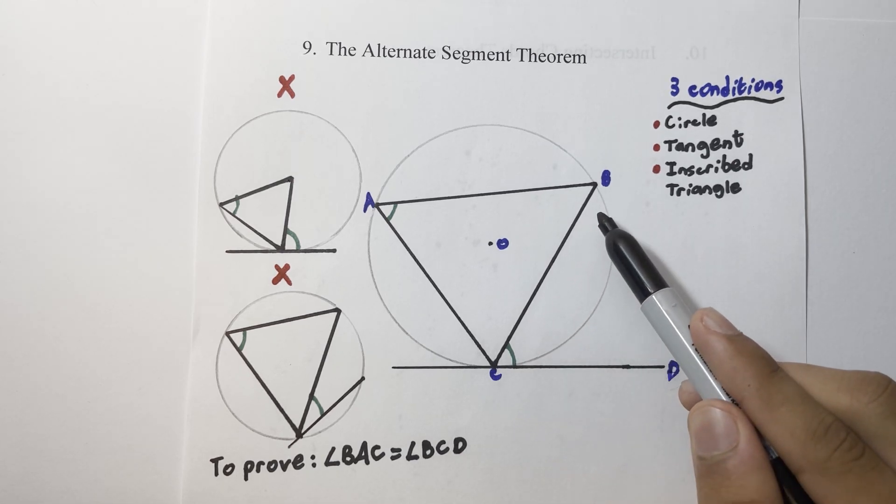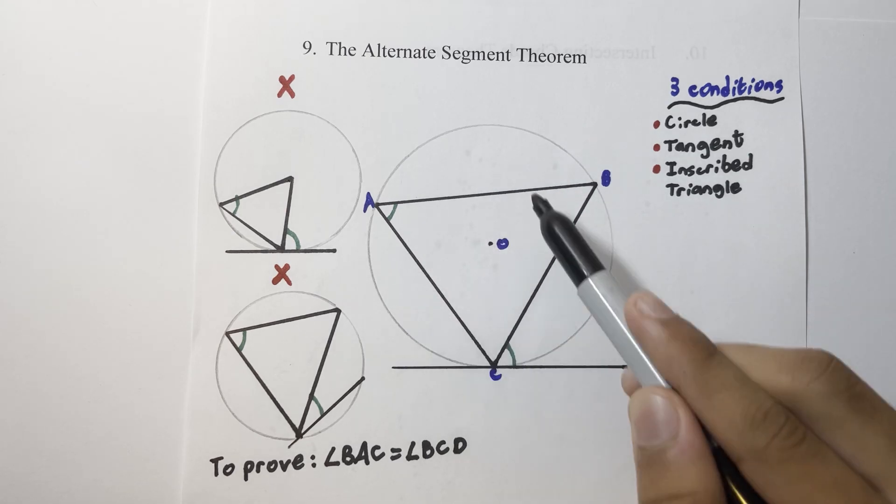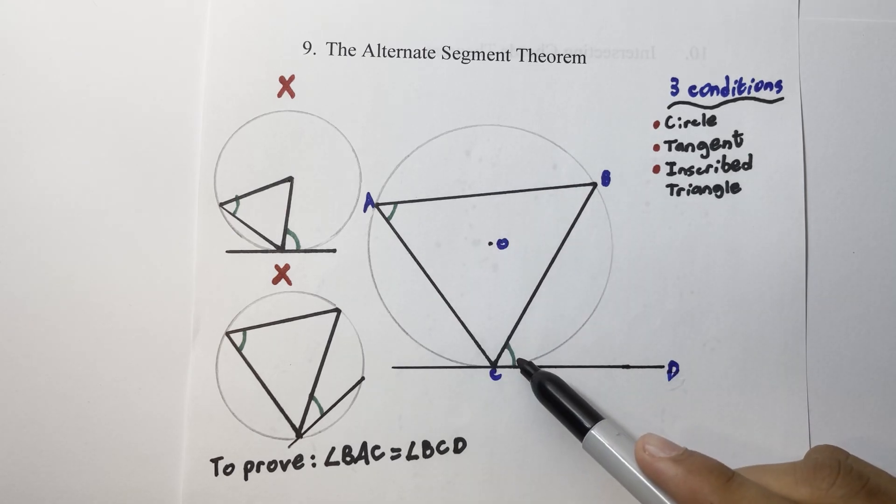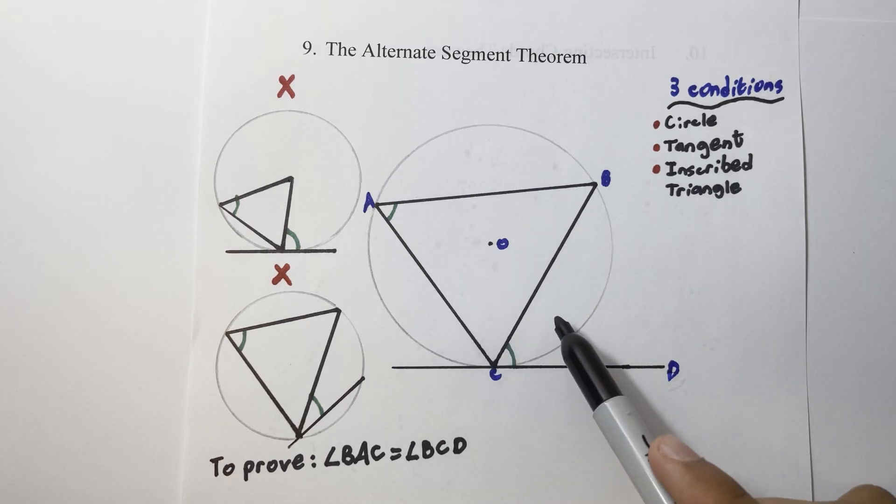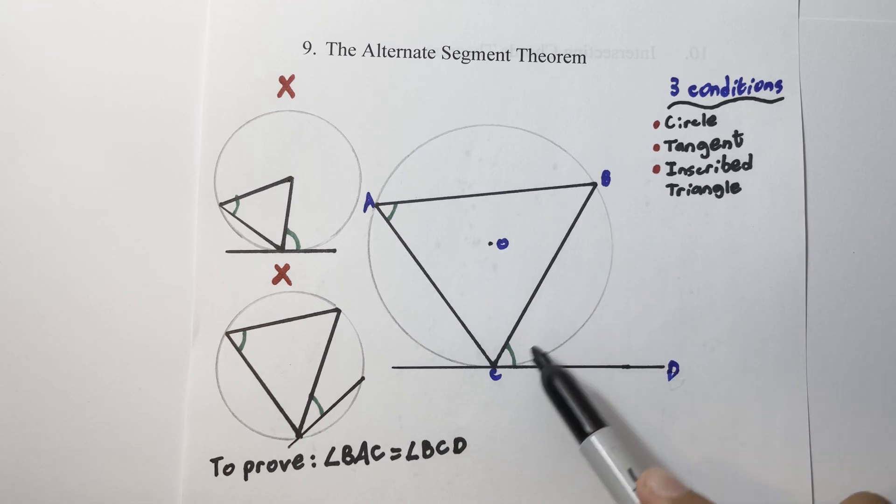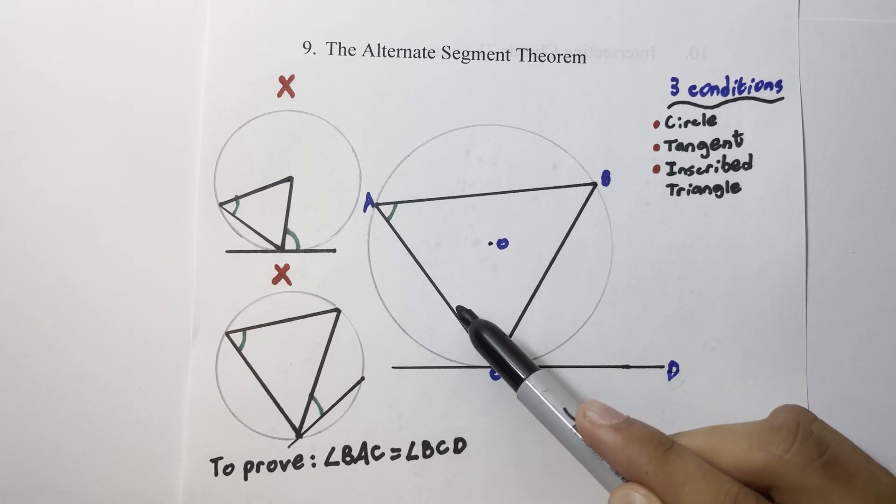So looking at this chord BC, the circle is divided into two segments, one here and one larger one here. So the angle formed between the triangle and the tangent BCD is equal to the opposite angle in the triangle BAC, because it's in the alternate segment. One is in the smaller segment here, one is in the larger segment over here.